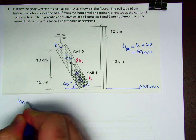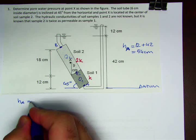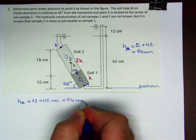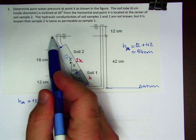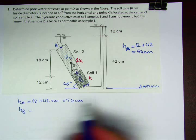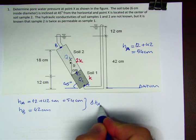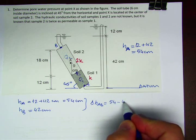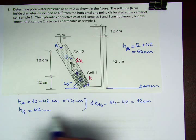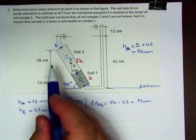First of all, the total head at point A is the distance between the datum and the water level, in this case 12 plus 42 centimeters, that is 54 centimeters. For point B, the total head is 42 centimeters. So Delta H between A and B is 54 minus 42, that is 12 centimeters.